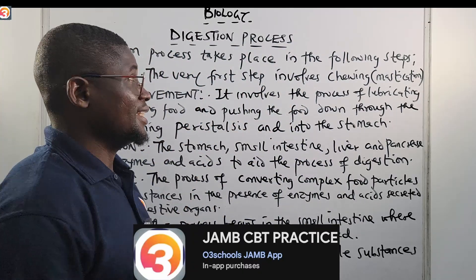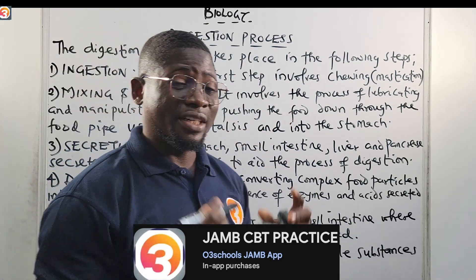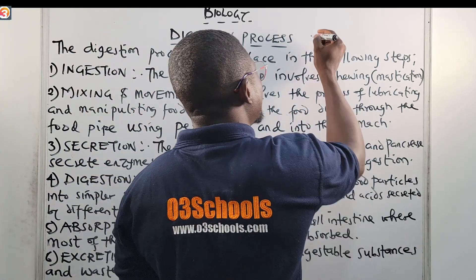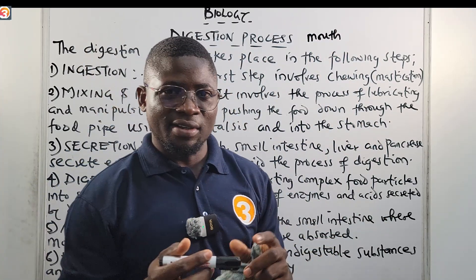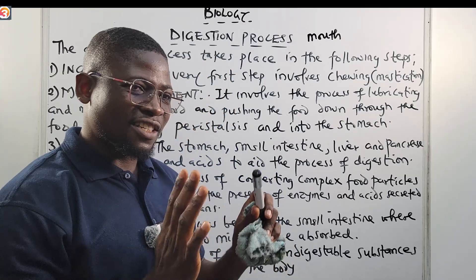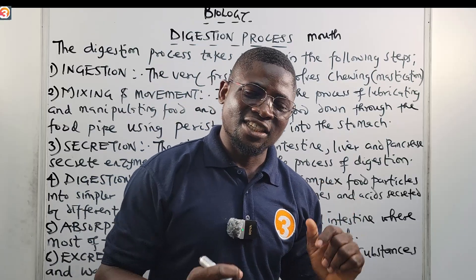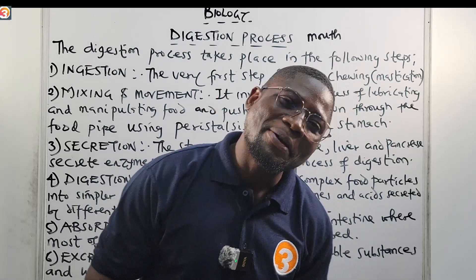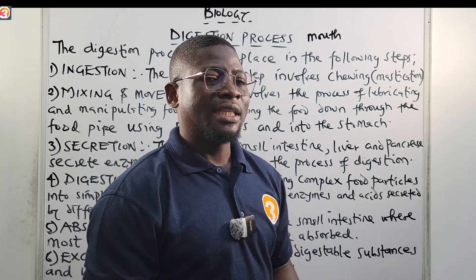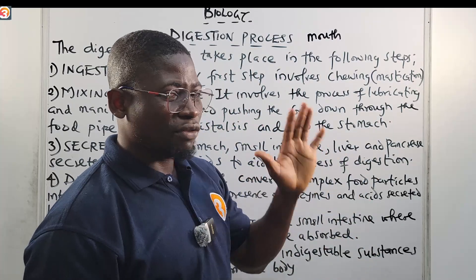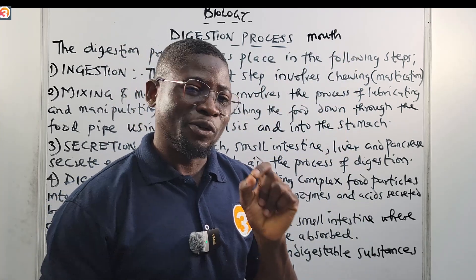Now let us look at the digestion process. The process of digestion begins from the mouth — also called the oral cavity or the buccal cavity — and it ends in the small intestine. Somebody will shout: what about the large intestine? The process of digestion mainly begins from the mouth and ends in the small intestine, where absorption of nutrients and digestion take place.